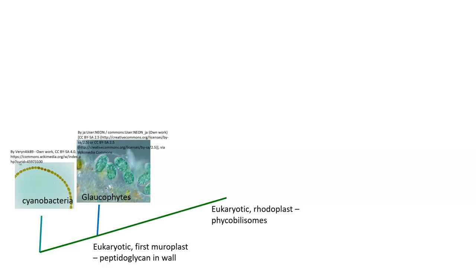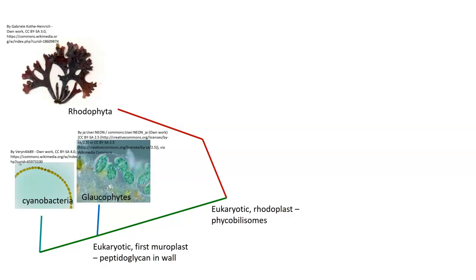From there we got the first eukaryotic organisms with a rhodoplast — 'rhodo' stands for red. So these are red in color, and they also have phycobilisomes, which are chloroplasts that are a little bit different in structure. This group is the Rhodophyta, the red algae. You can see how they're kind of red in color, and many of them are seaweed-type things with that distinct tonality.